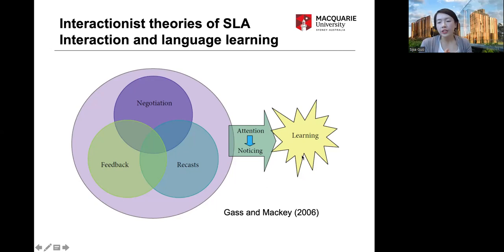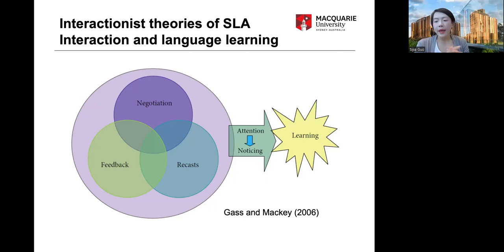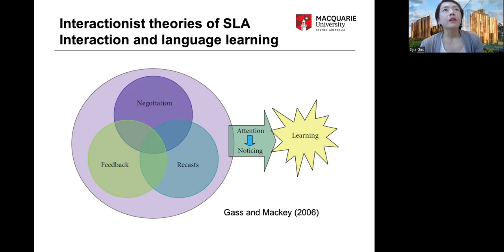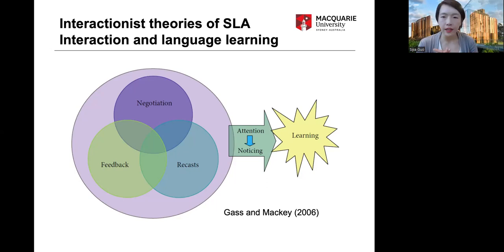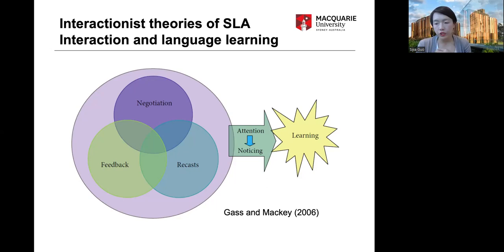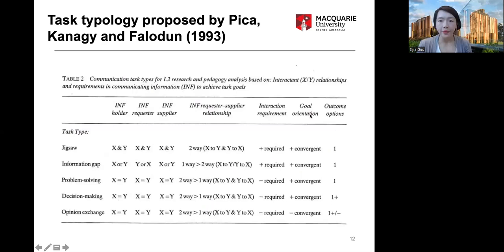The interaction hypothesis suggests three ways interaction contributes to second language acquisition: first, interactional modification that makes input more comprehensible; second, learners' acquisition is facilitated by receiving feedback on their language production — which is why encouraging students to do language exchanges with native speakers is valuable; and third, acquisition is promoted once students are pushed to reformulate their language output, drawing their attention to notice the gap.